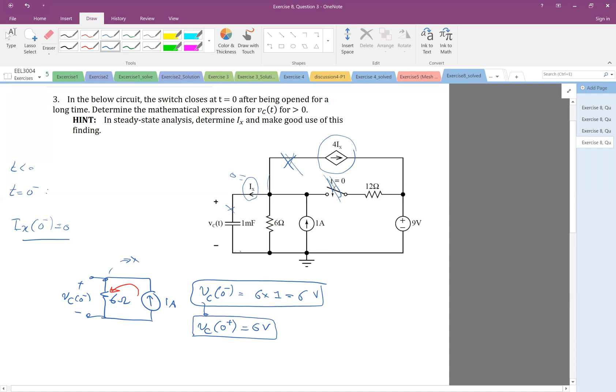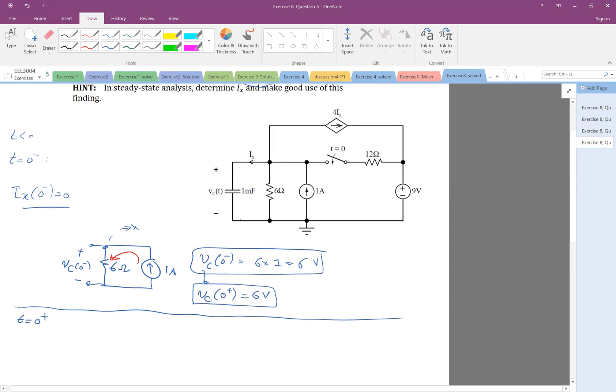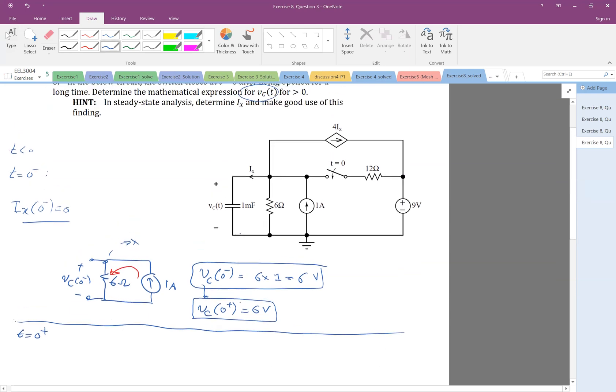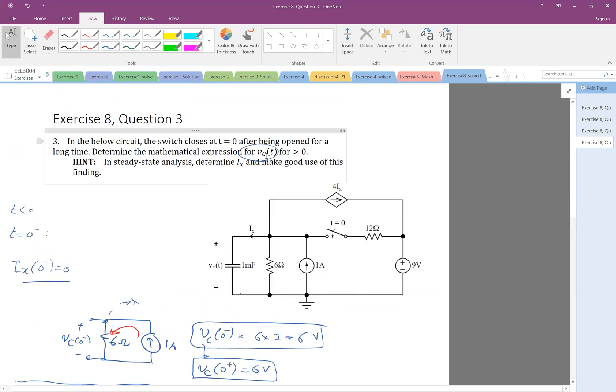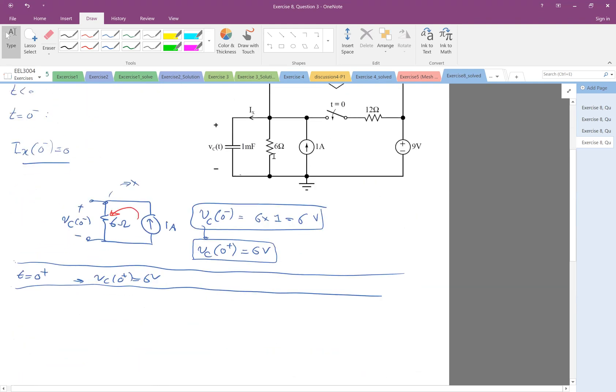Okay, very good. So we have this information from before the switch is closed. Now, at t equal to zero, we close the switch, so let's look at t equal to zero plus, we close the switch, and eventually, we want to find V of C. So for that, I know we already have six volts, so I don't need to calculate anything more, but then at infinity, because we need to know the voltage across all time, so let's get the t equal to infinity.